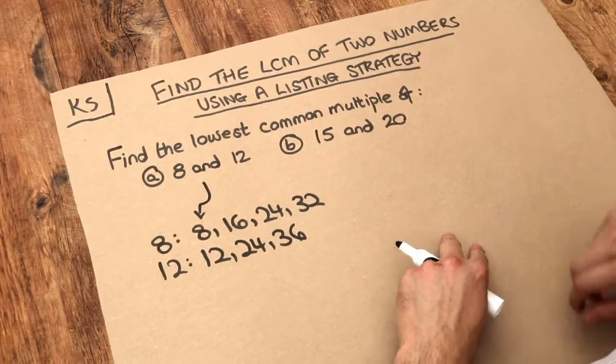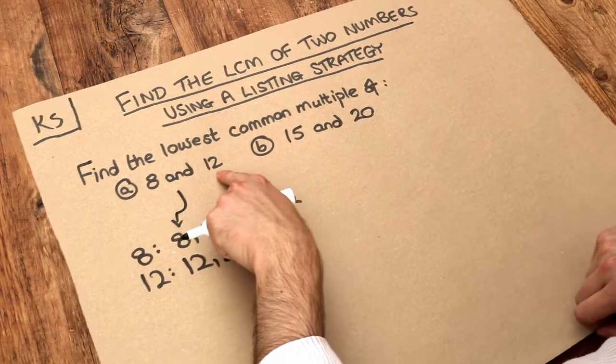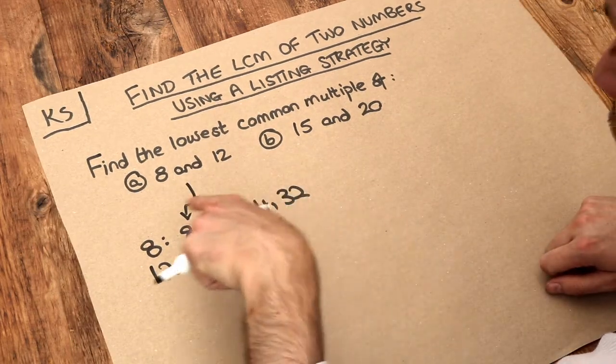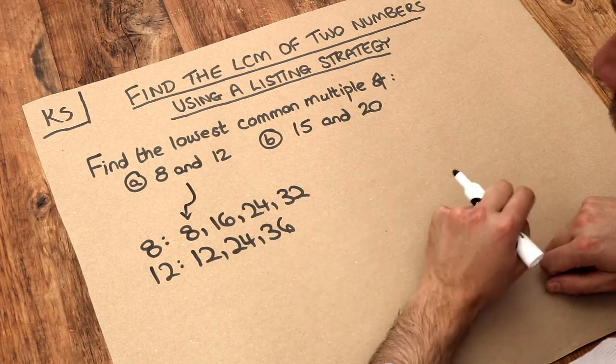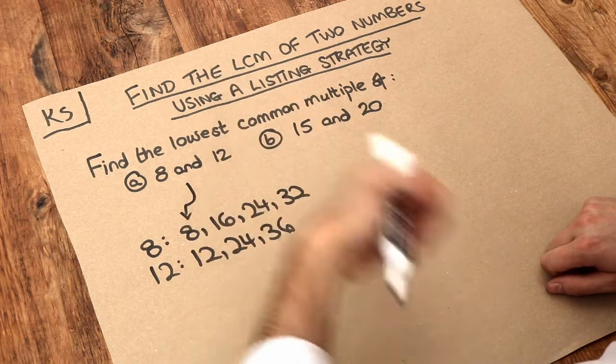Now let's reflect now on the word common. So it's a common multiple of 8 and 12. That means it's going to be a multiple that's common to both of these lists. That is, it's a multiple of 8 and a multiple of 12. It's common to both.